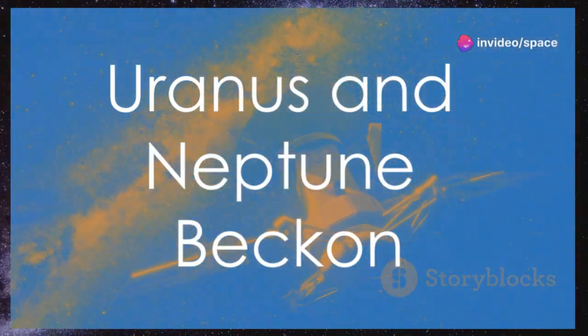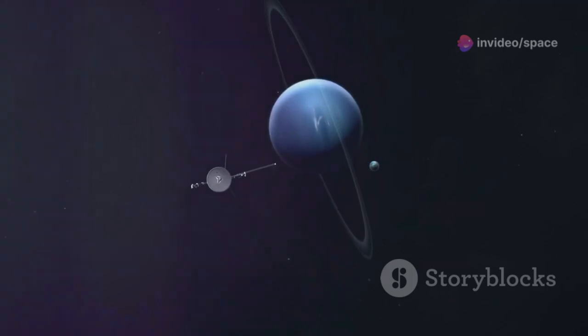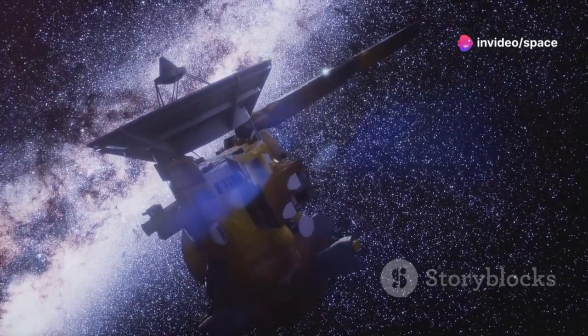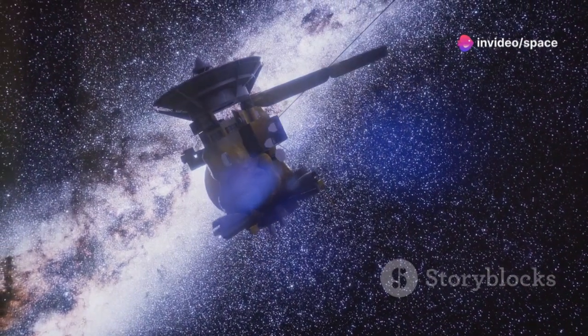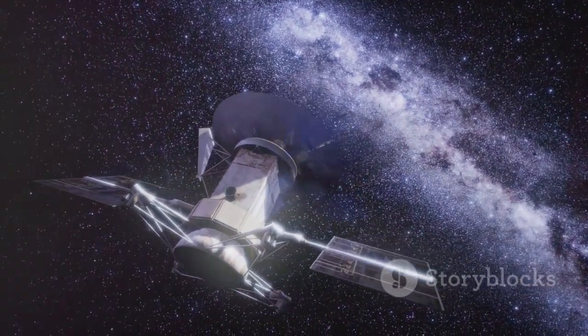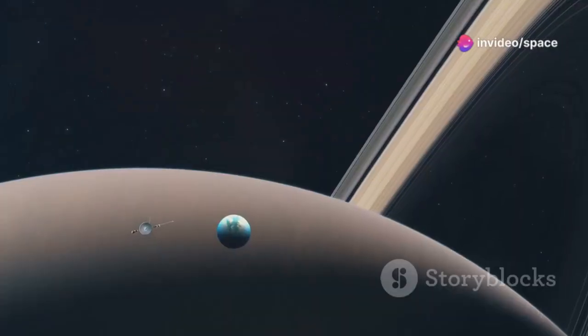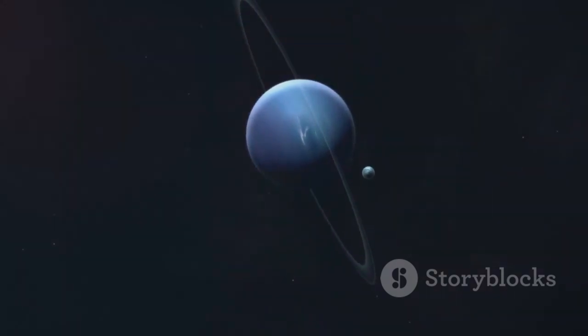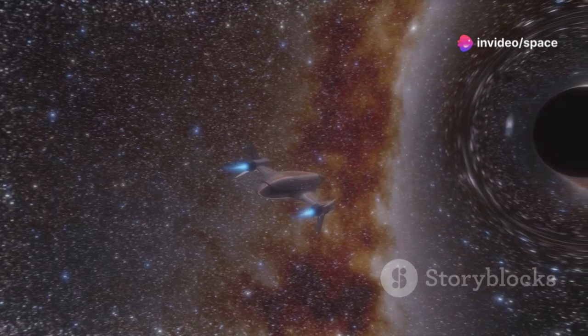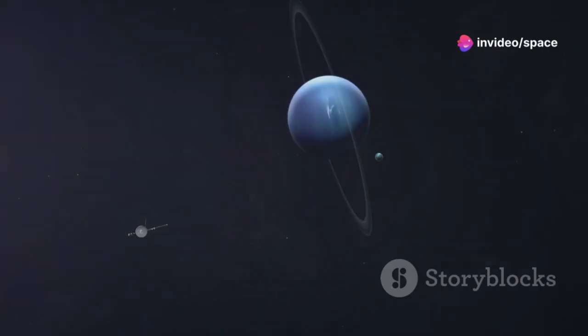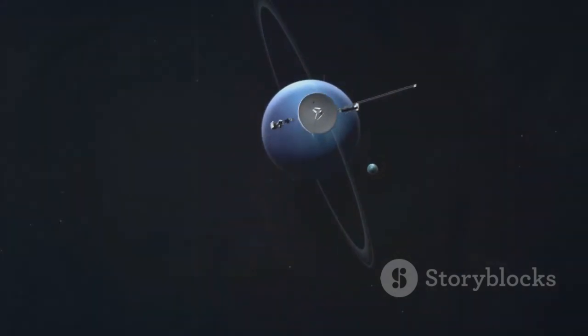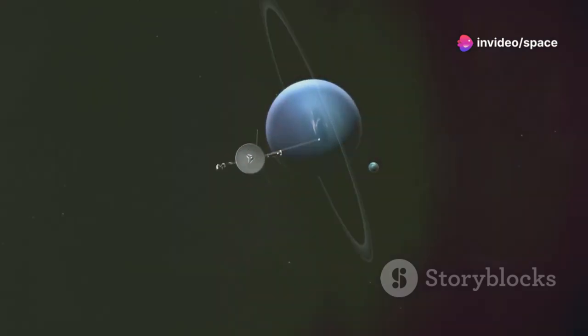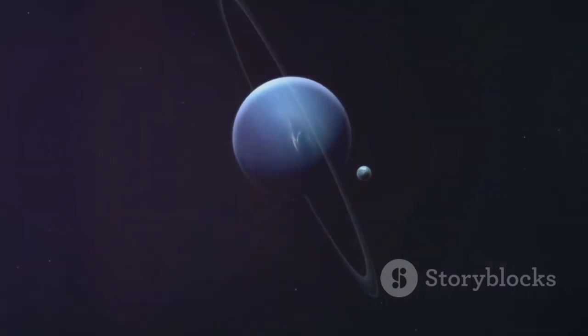After their encounters with Jupiter and Saturn, the Voyager probes continued their journey outward, venturing into the uncharted realms of the outer solar system. Voyager 2 was the only probe to visit Uranus and Neptune, providing our first close-up glimpses of these ice giants. In 1986, Voyager 2 reached Uranus, a planet tilted on its side with a faint ring system. Three years later, in 1989, Voyager 2 reached Neptune, revealing its striking blue atmosphere adorned with swirling white clouds and a massive storm system known as the Great Dark Spot.